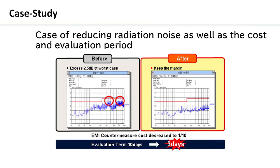Next, I will show an example of a case study using EMI Stream. The graphs on the left and right respectively show actual EMI measurements before and after using EMI Stream. As you can see on the left graph, the values exceeded EMC standard limits before using EMI Stream and failed the EMC test. However, when EMI Stream EMI Design Rule Checker is applied, EMI easily passed the EMC standards as shown in the graph on the right. Furthermore, this case reduced the EMI countermeasure component cost to one-tenth and reduced the evaluation period from 10 days to 3 days. Using EMI Stream improved design quality, reduced cost, and slashed the development period.